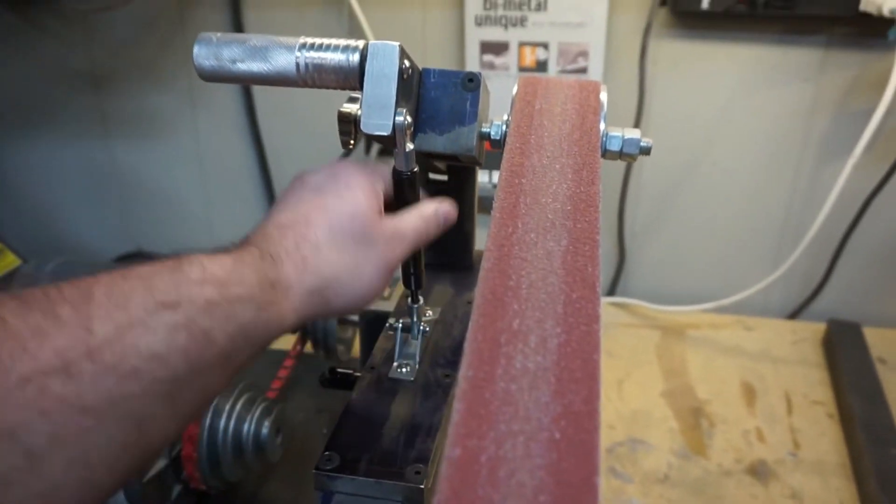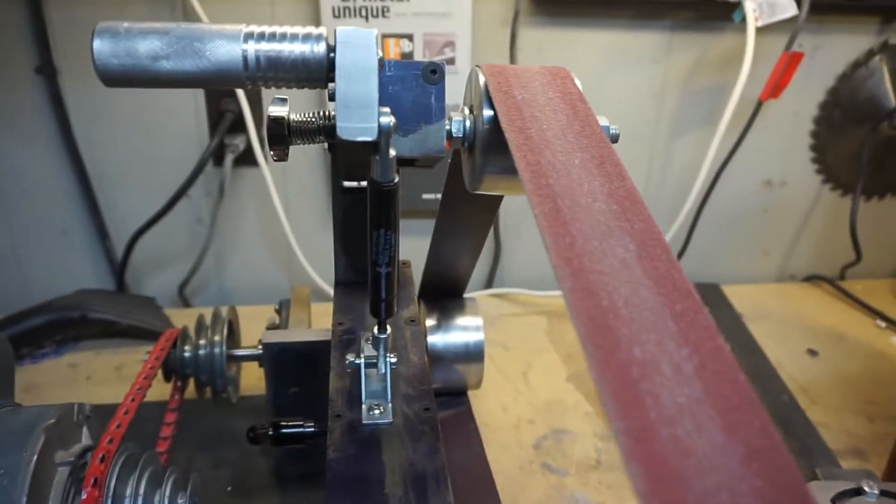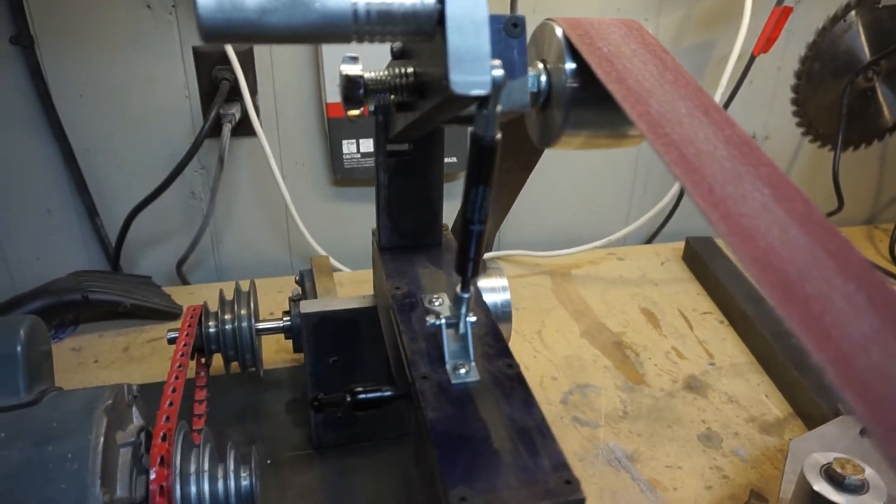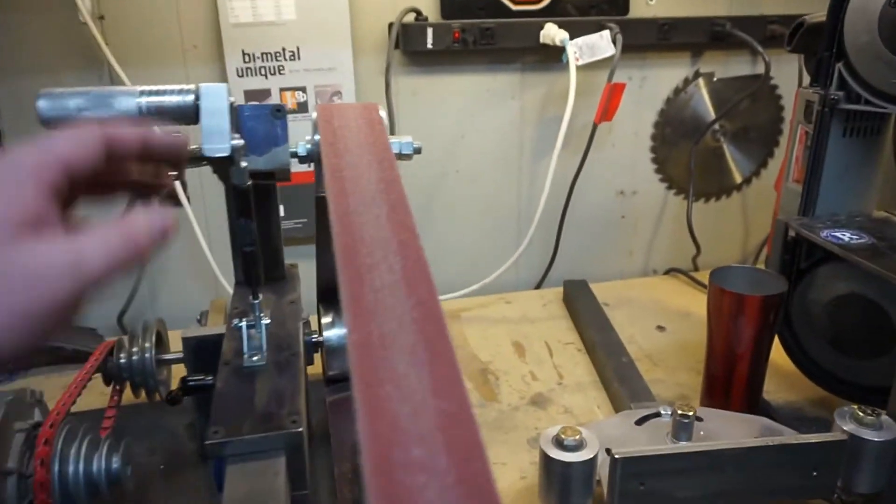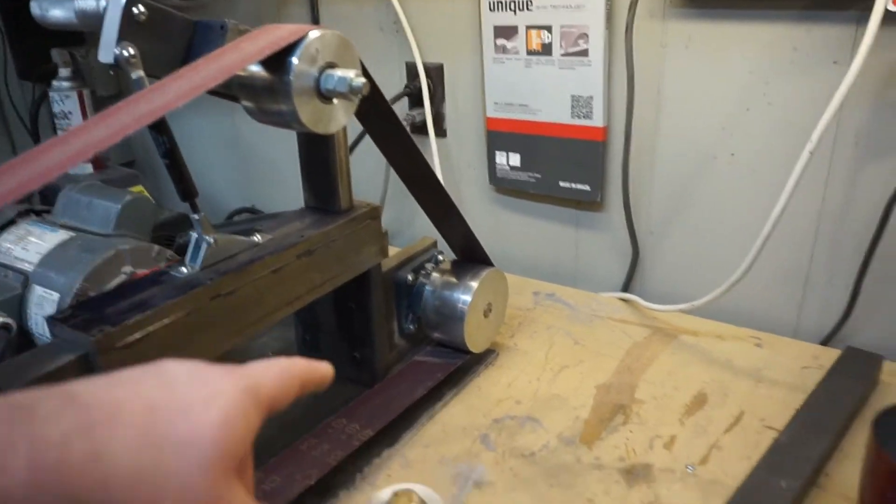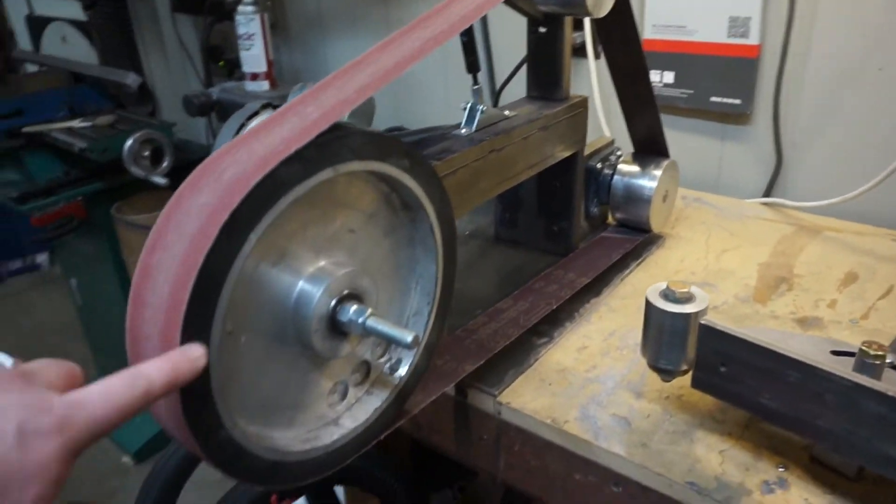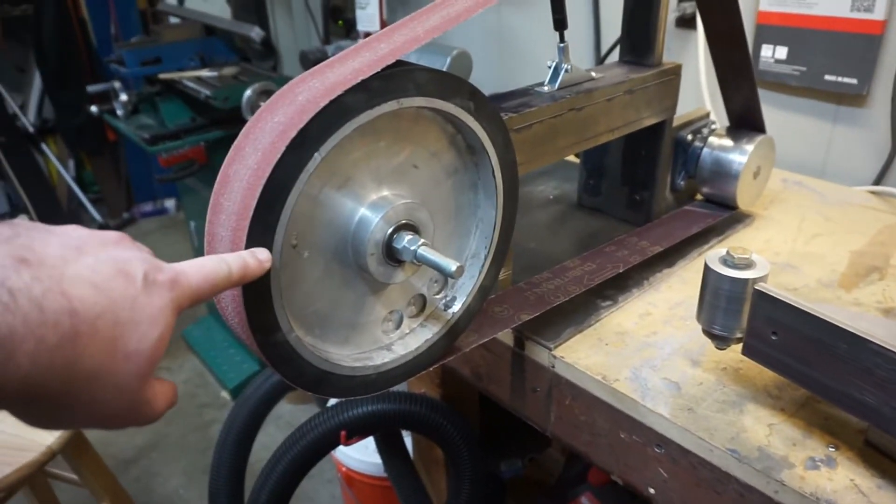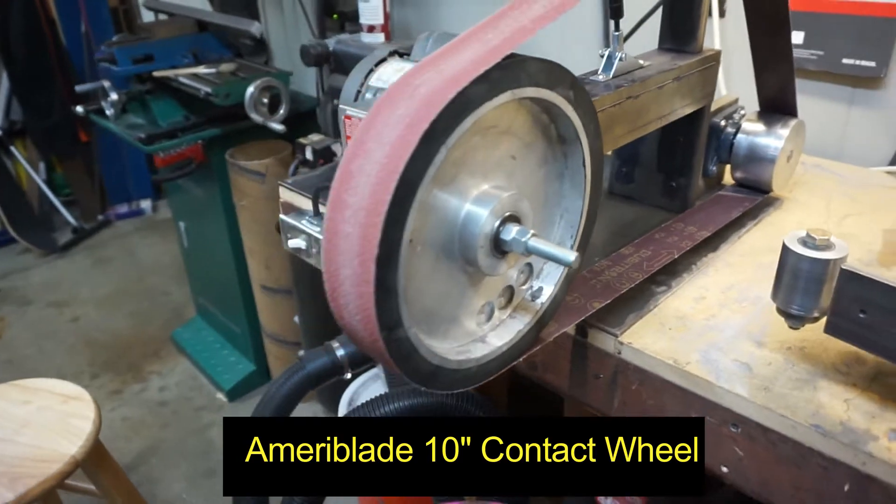My spring is a 30 pound strut, which I will also link in the description below. So my tracking wheel and drive wheel are both from Oregon Blade Maker. My contact wheel, top of my head I can't remember, but I'll put it on screen so you guys can see it.